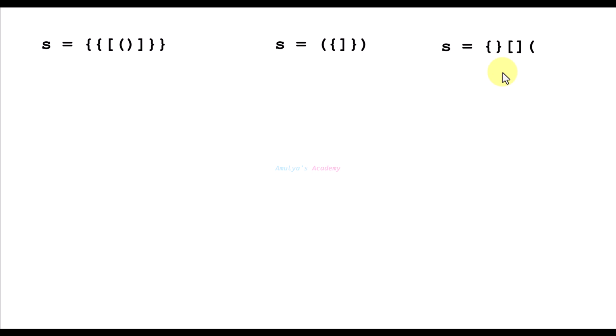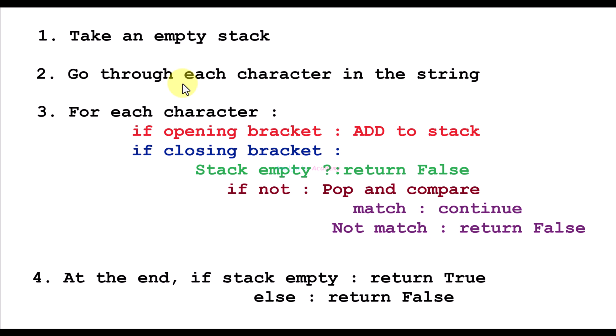If you remember all the rules of valid parenthesis you can identify whether a given string is valid or not, but remembering all the rules is not that easy. Don't worry — we have another method: we can identify valid strings using stacks. First we take an empty stack, then we go through each character in the string one by one, and for each character, if it is an opening bracket we add it to the stack.